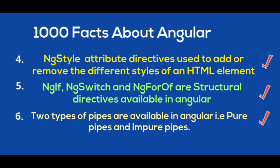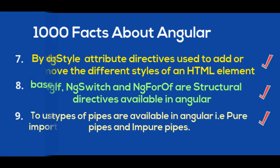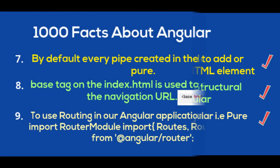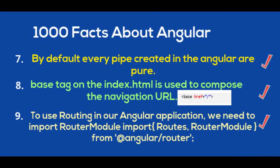Sixth: There are two types of pipes available in Angular — pure pipe and impure pipe. Seventh: By default, every pipe created in Angular is pure.